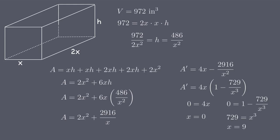We find that our critical points are x equals zero and x equals nine. Because we're talking about the dimensions of a box, we know that x equals zero cannot be a solution, so x equals nine is our only valid critical point. Since x equals nine, we can calculate the dimensions as nine by eighteen by six.